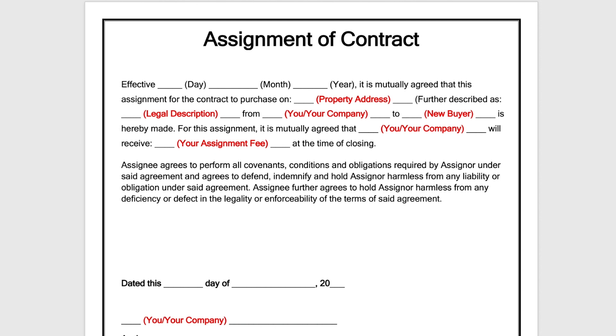We have the assignment of contract pulled up here. At the very top, 'effective date' — this is going to be the day, month, and year that you're going to sign this contract with your new buyer.